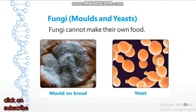Our next group of microorganisms is fungi — mold and yeast. You can see here the diagram of mold growing on bread and the diagram of yeast. Fungi cannot make their own food; they absorb food from the source they are growing on. Some fungi grow and feed on dead material, while others feed on living plants and animals. Most fungi are harmless, but some cause diseases in plants and animals. Mold and yeast are common examples of microscopic fungi.